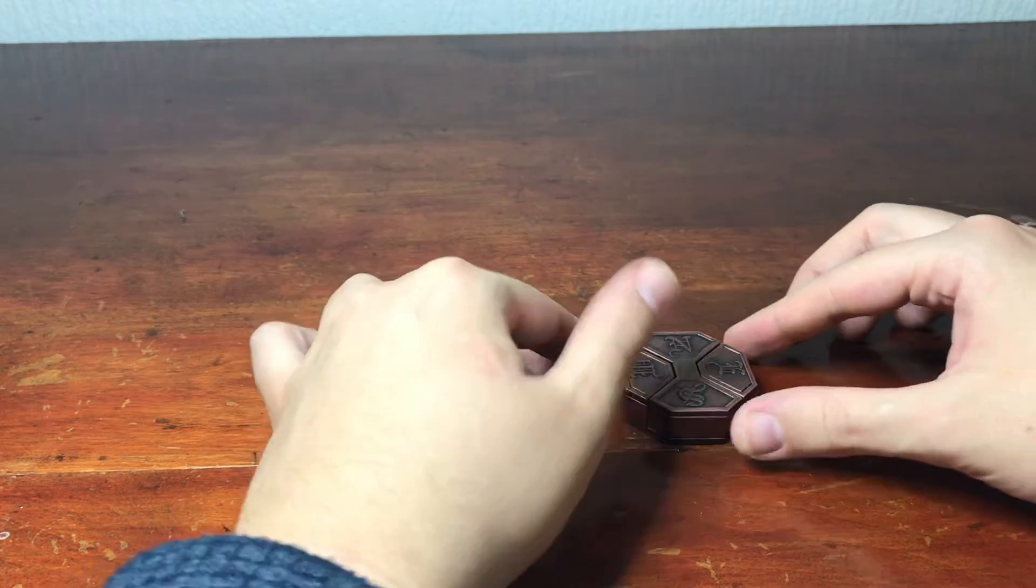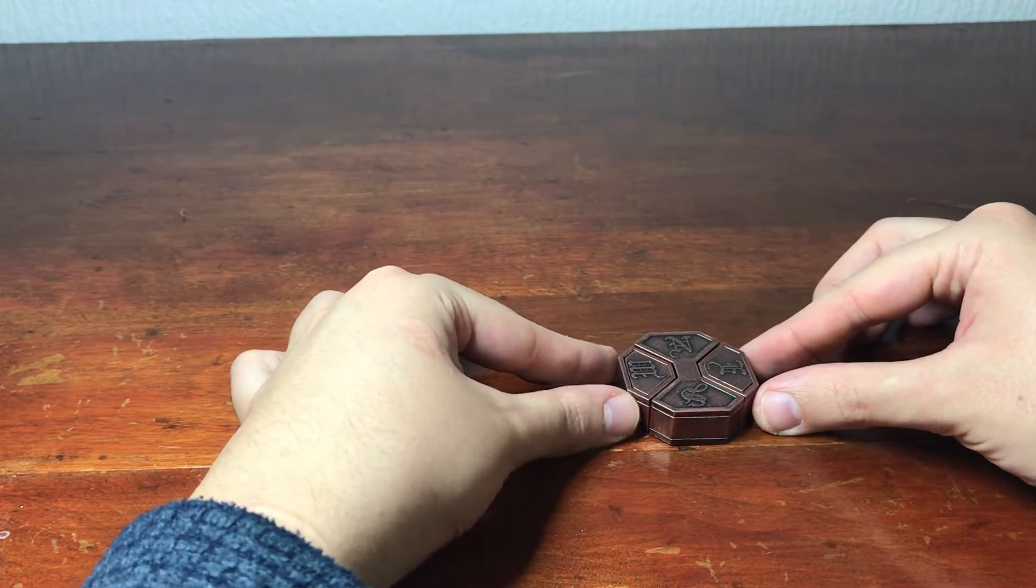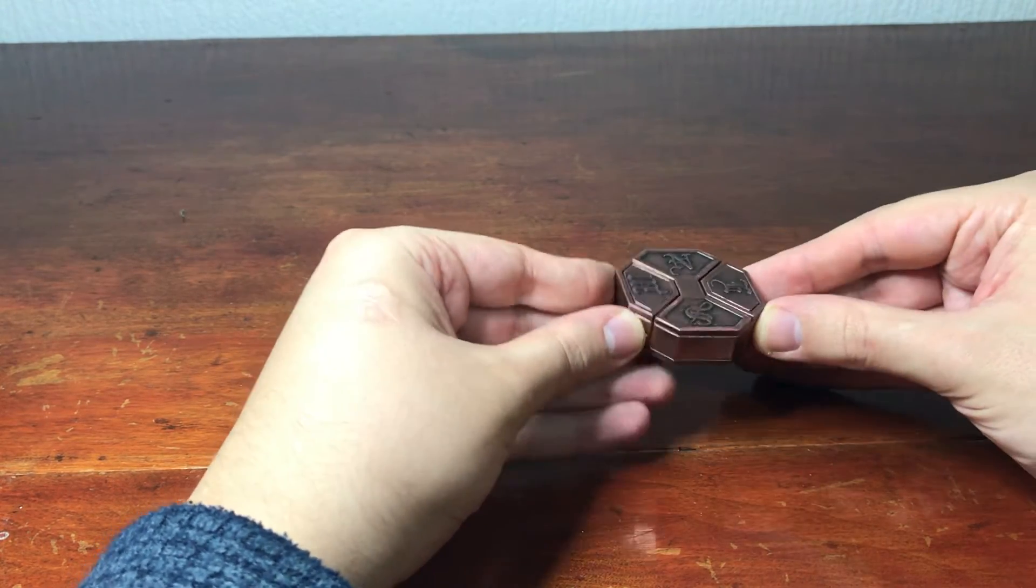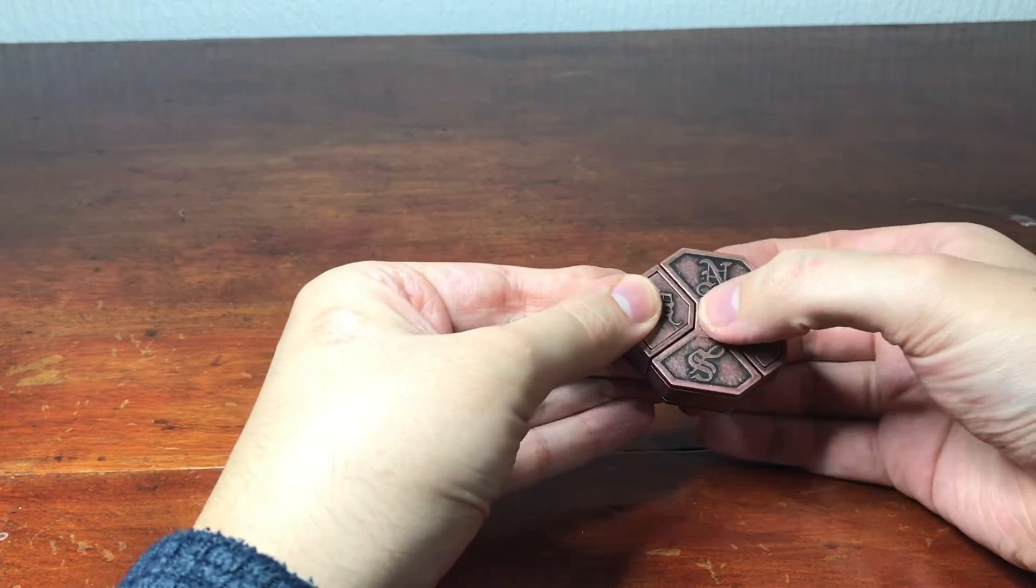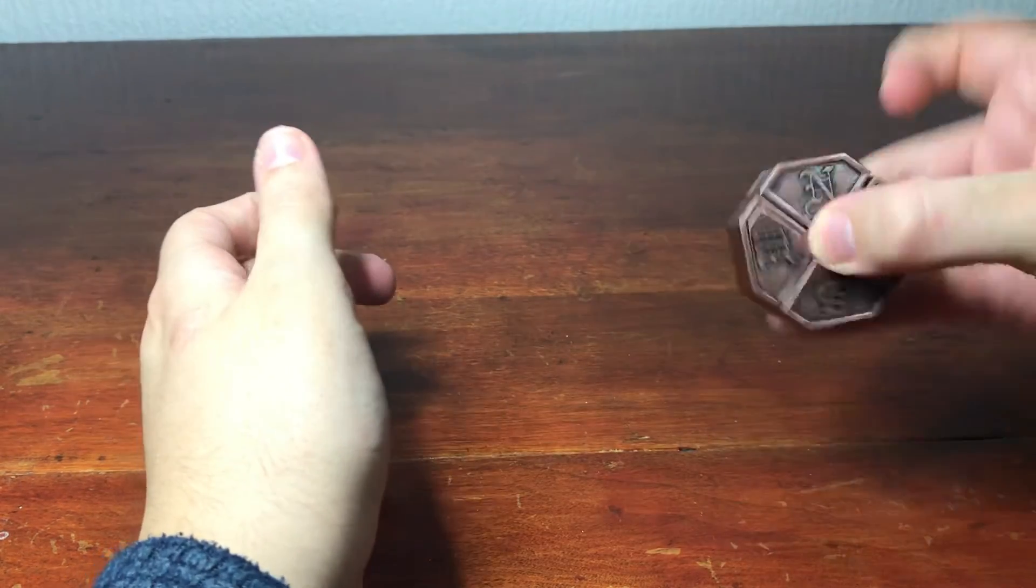When you're happy with how it's together, lift it up by the west and east part like that. Pinch it in the middle, and then just tilt it.